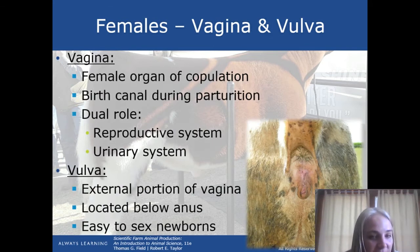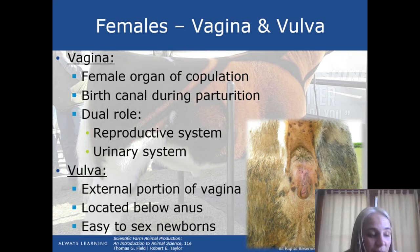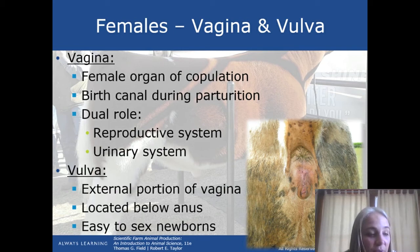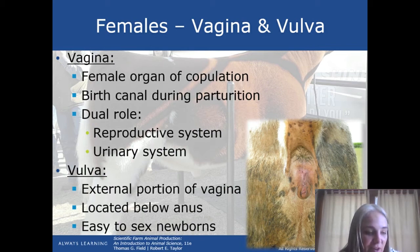The cervical plug keeps the uterus clean, and losing the plug is one of the signals at the beginning of the birthing process. The cervix joins the uterus and vagina. The vagina is the female organ of copulation — where the male reproductive organs join the female during mating, and also the birth canal during parturition. The bladder also empties into the vagina, which is another reason the cervical plug is so important. The external part of the vagina that you can see is called the vulva, located right below the anus. To check the sex of a newborn animal, lift the tail and check for a vulva.